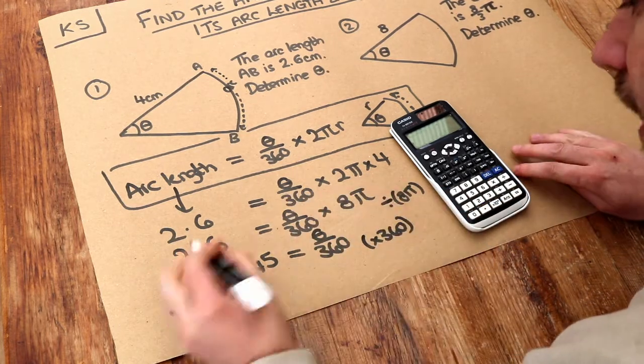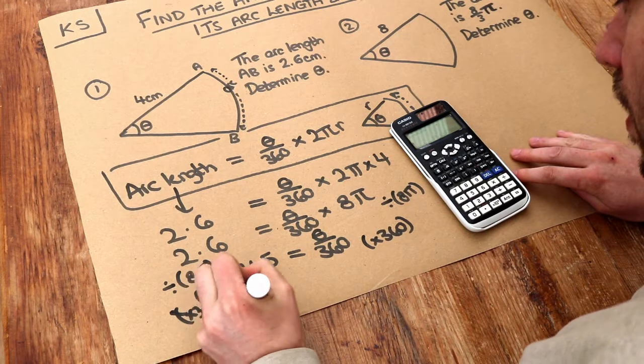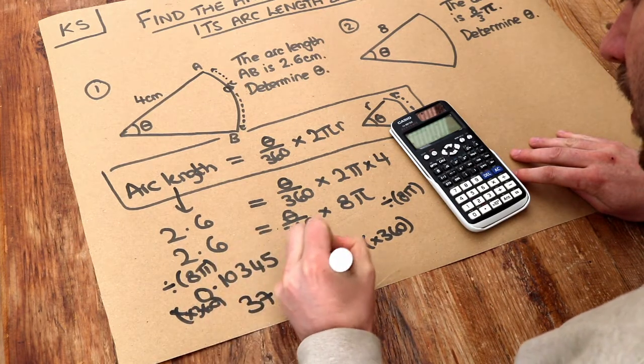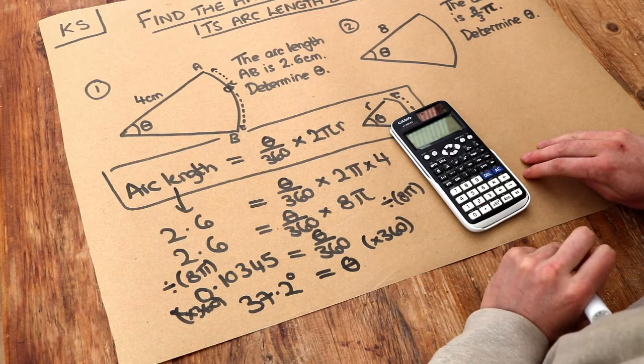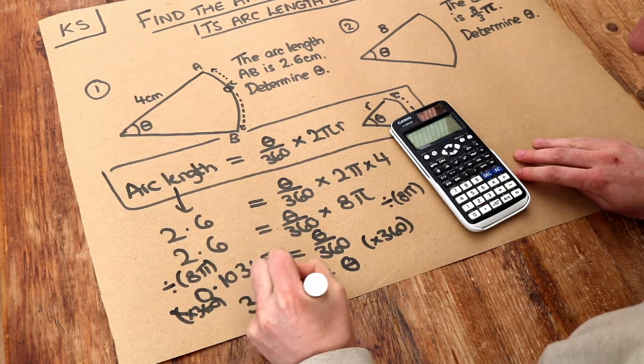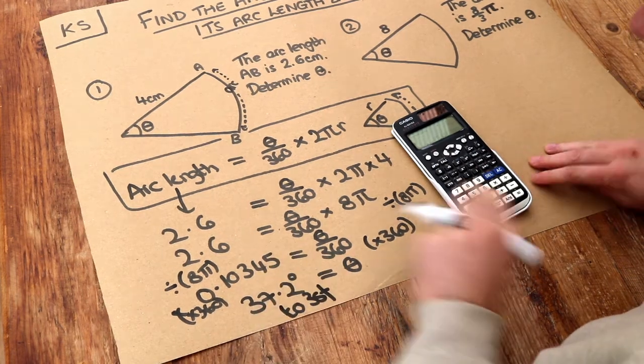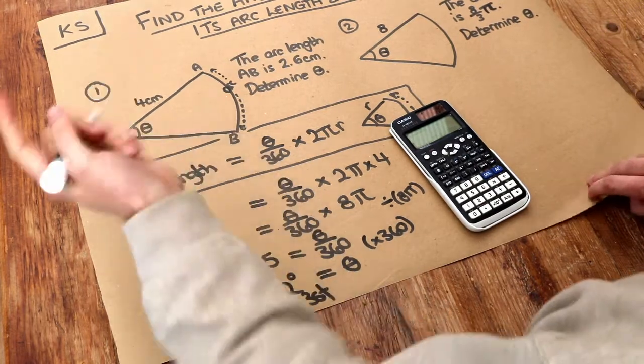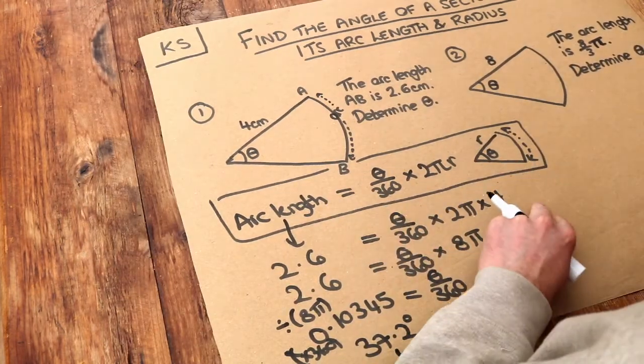And that gives you 37.2 degrees. So that's θ, and that was to three significant figures. I'll put 3SF. That is the final answer. Let's just check it's sensible. Yeah, that looks like it could be right, so that's probably the right answer.